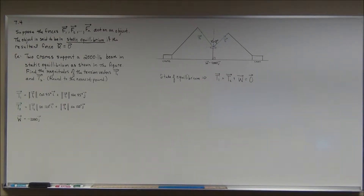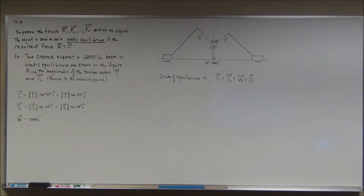All right, we are hopefully going to finish up section 4 of chapter 7 on vectors. It has been a weird, wonderful ride so far. I have one last application example because we haven't done an example of what we refer to as static equilibrium.